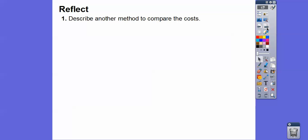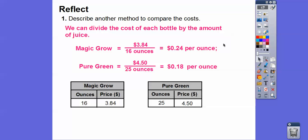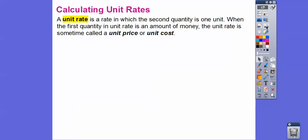Here's another method to compare the cost. We can take the price of Magic Grow, which is $3.84, and divide it by the amount in the bottle, which is 16 ounces. So $3.84 divided by 16 is 24 cents per ounce. And then Pure Green: $4.50 divided by 25 ounces gives us 18 cents per ounce. We get the same answer, but that's another way.